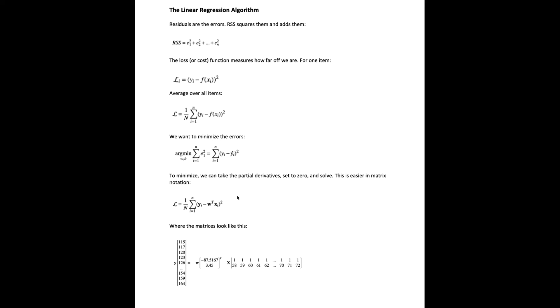How does the algorithm learn the coefficients from the training data? It starts off with a loss function. Remember that RSS, our residual sum of squared errors, is just all of the errors, the residuals, squared. We square them because some are positive and some are negative.